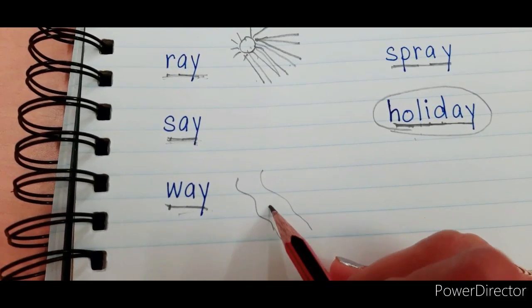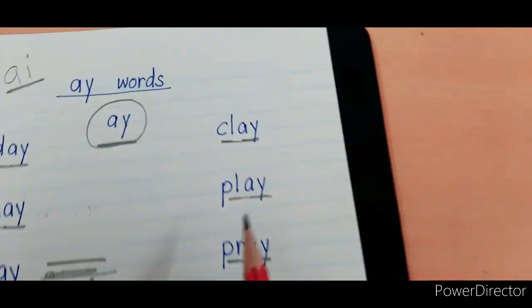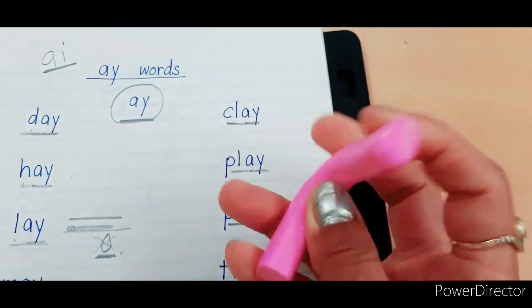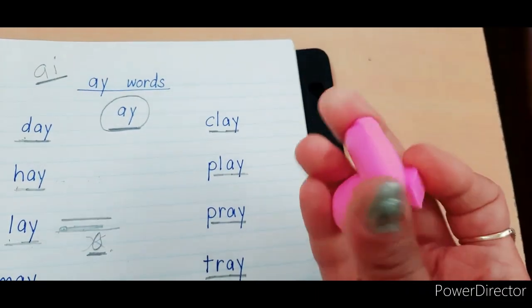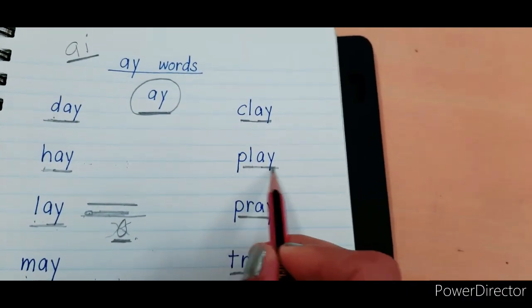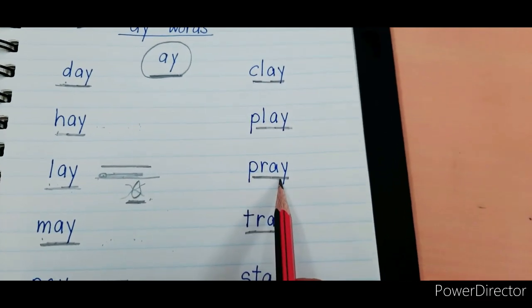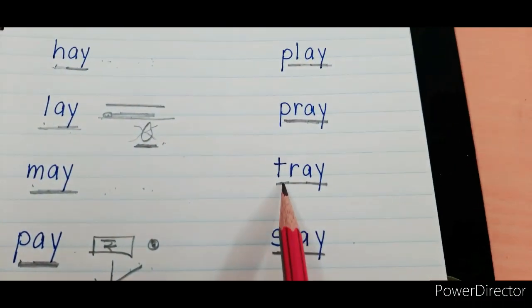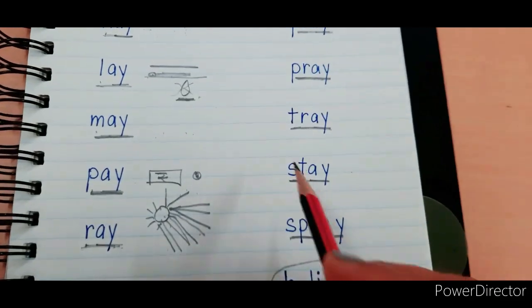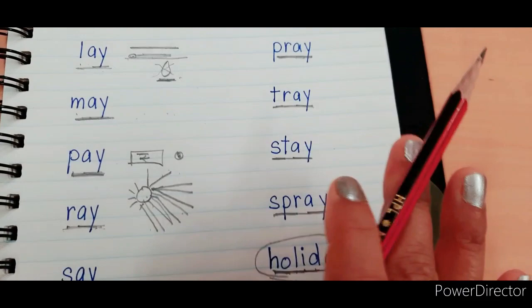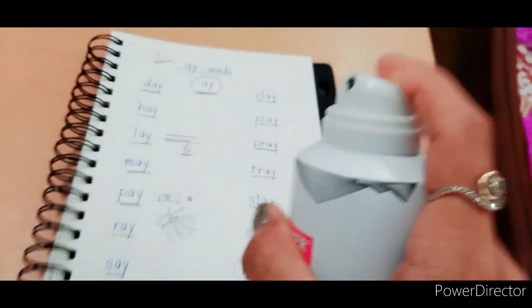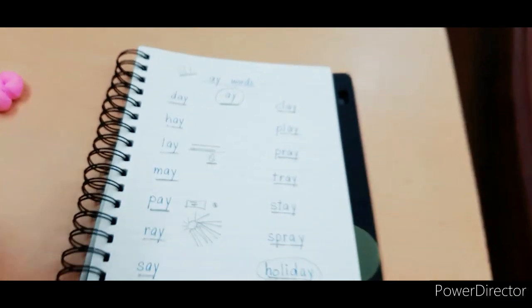'Clay' — you all must be having clay at your home. You play with the clay, you mold it, you make a shape. 'Play' means khel na — to play. 'Pray' means puja — we pray to God. 'Tray' — you must be having a tray at your home. 'Stay' means rukna, theherna. 'Spray' means to spray, like spraying perfume.